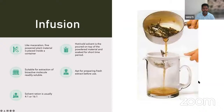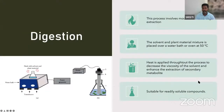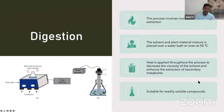The next method is digestion. This process involves moderate heat during extraction — about 40 to 60 degrees temperature. The solvent and plant material are placed in a water bath or oven at 50 degrees centigrade. Heat is applied continuously to decrease viscosity of the solvent and enhance extraction of secondary metabolites. This is also suitable for readily soluble compounds.